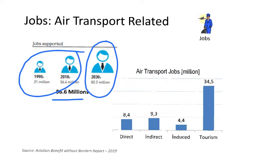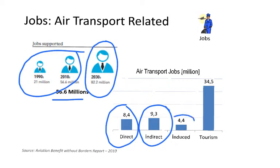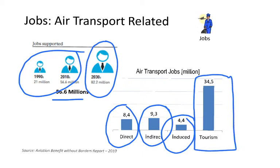Jobs are divided into different groups. We have direct jobs — for instance, a pilot working for an airline. We have indirect jobs — for instance, an architect working for the firm that designed a new airport. We have induced jobs: near the airport, many people work for airlines and airports, and those people go to the supermarket, go shopping, and so on — so a number of jobs are induced from aviation. And last, and most importantly, are all the tourism-related jobs created because of aviation.